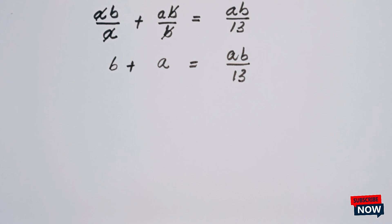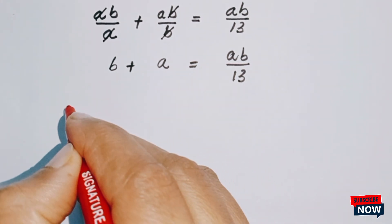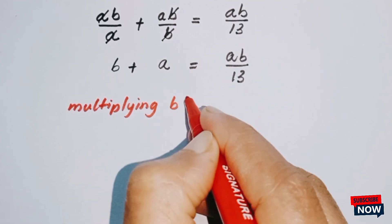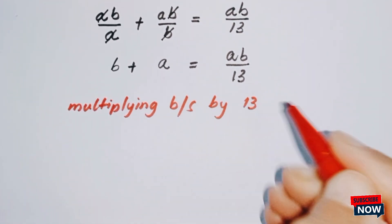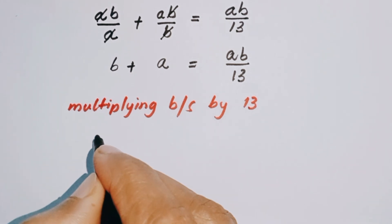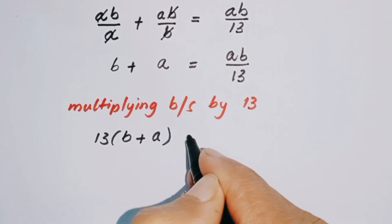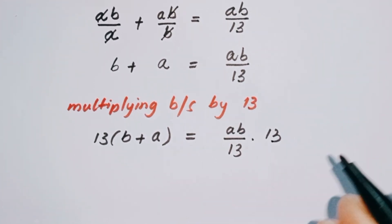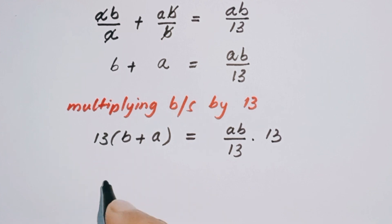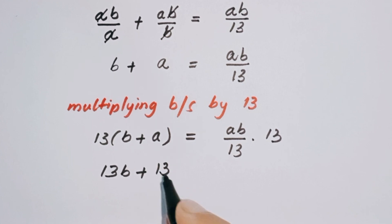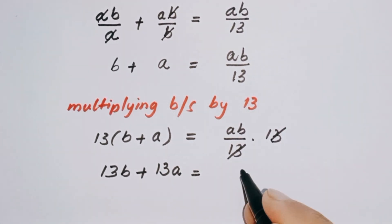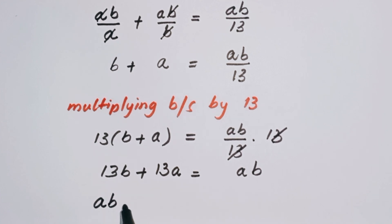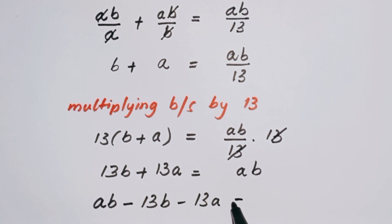Now multiply both sides of this equation by 13. So 13 times (b plus a) equals ab over 13 times 13. We get 13b plus 13a equals ab. Bringing both terms to the right hand side, we get ab minus 13b minus 13a is equal to 0.